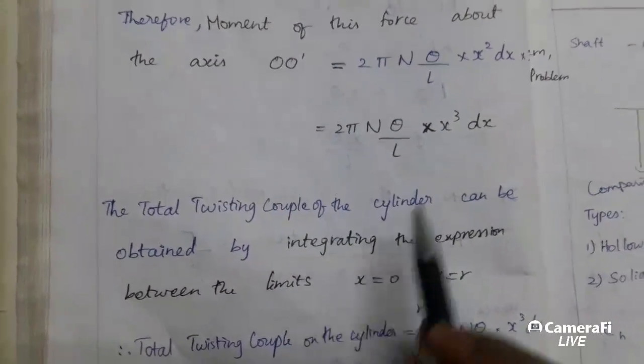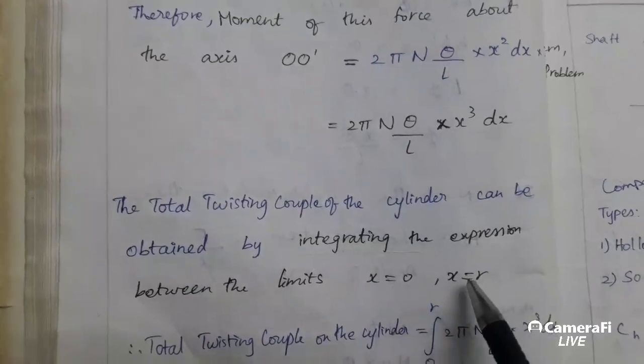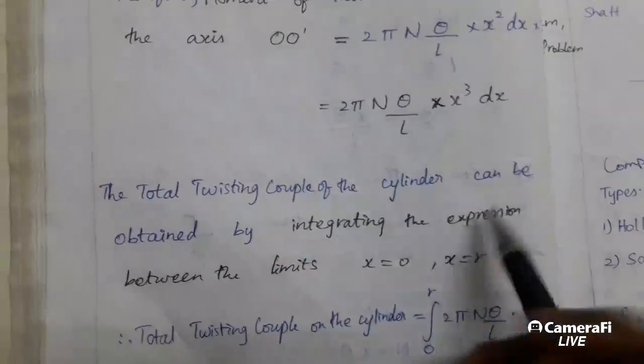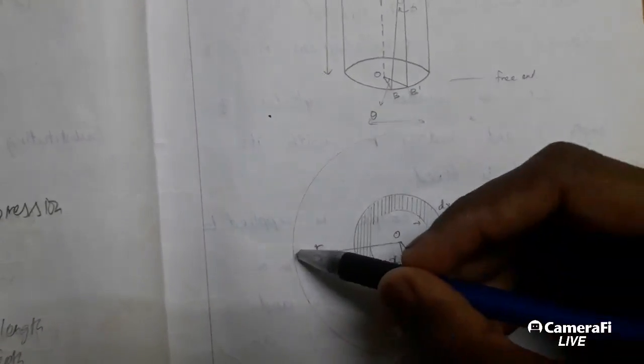The total twisting couple of the cylinder can be obtained by integrating the expression between the limits X equals 0 and X equals R, because the minimum distance of X is 0 and maximum distance is R.